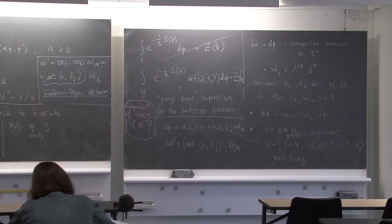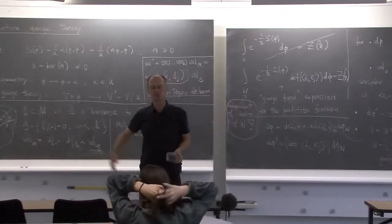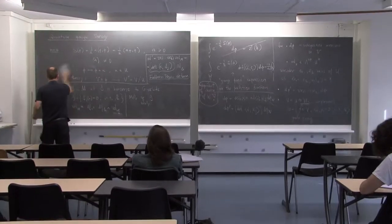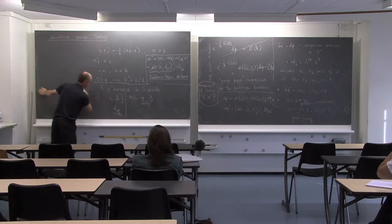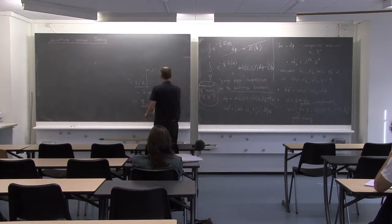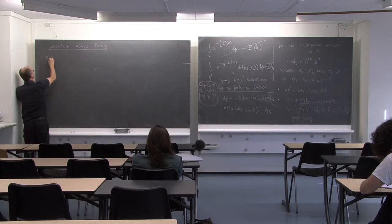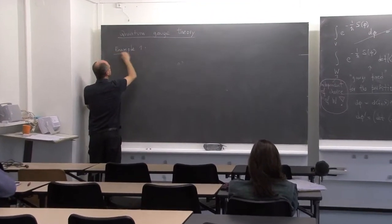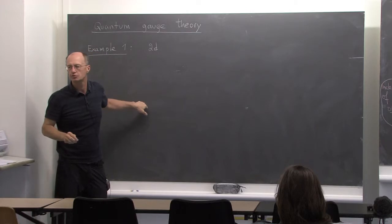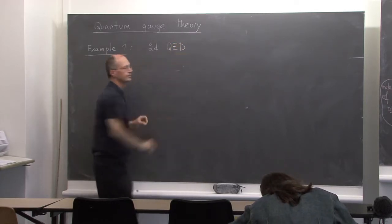Instead of giving a general theory, we'll look at different examples. I prepared three examples for today and we'll see how far we can get. Example number one: we start with examples in dimension two, and then at the next hour perhaps look at one example in dimension three. So: two-dimensional quantum electrodynamics.